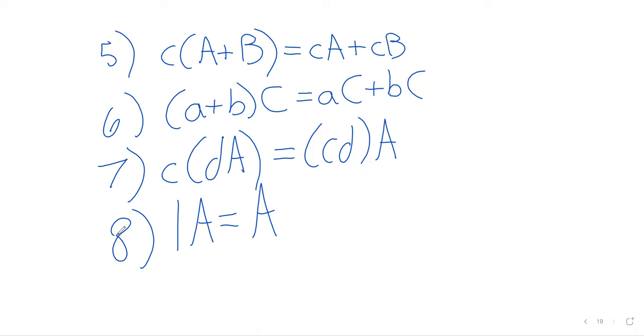And I know I went through that list fast, but again, when I first introduced vectors in 1.3, I put up an eight element list of properties that they have. And this list is that list, except that instead of vectors, we have matrices. And once again, the take home message of all of this is that this acts the way you'd expect it to. These are all very normal properties that the real numbers have.